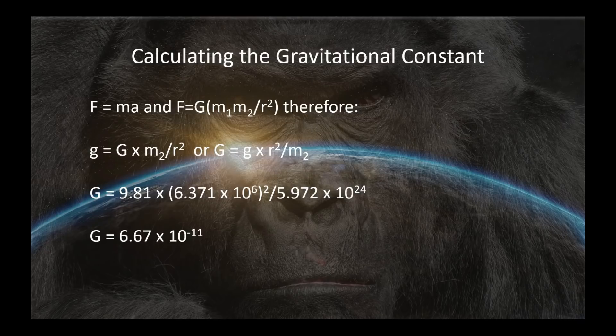Little g, gravitational acceleration, equals big G times the big mass, the mass of the earth, divided by its distance, the square of its radius. In other words, the distance from the center of the earth to sea level. We can rearrange that to say big G is equal to little g times r squared divided by the mass of the earth.